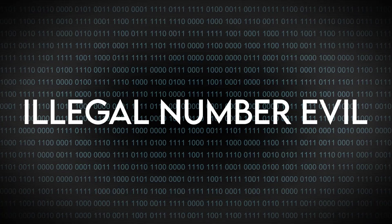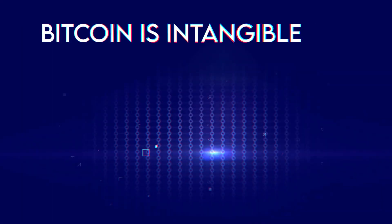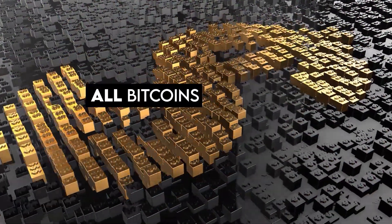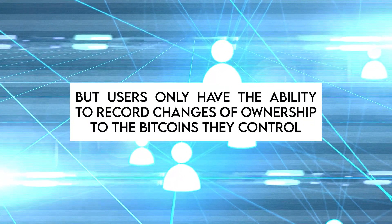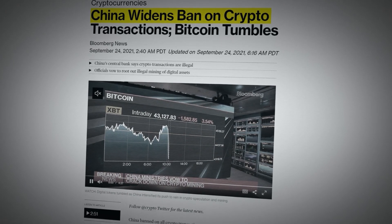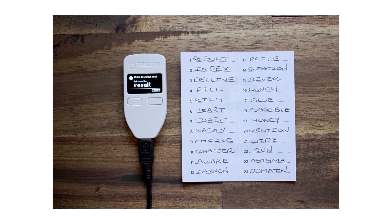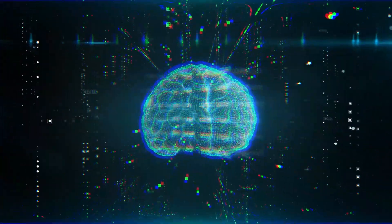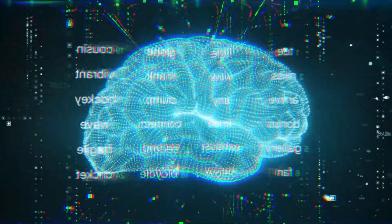Illegal number — evil. How do you truly criminalize numbers? Bitcoin is intangible and isn't physically stored anywhere. Well, technically, all Bitcoins are stored on all nodes, but users only have the ability to record changes of ownership to the Bitcoins they control. So what does it mean to actually enforce a ban on the possession of Bitcoin? Think about it. It's made even more ridiculous with the advent of mnemonics and seeds — while not necessarily recommended, it is possible to memorize the seed to a wallet and leave no physical or electronic trace of Bitcoin possession.